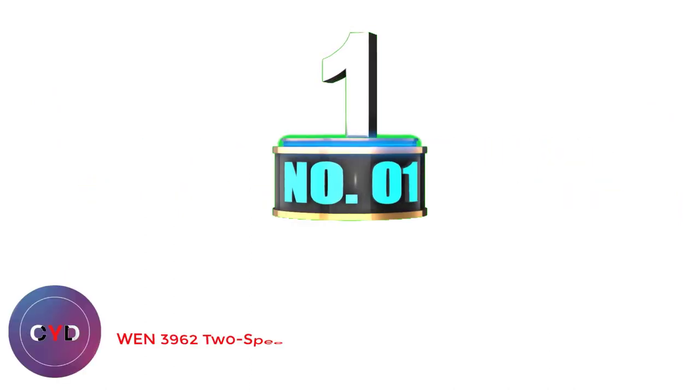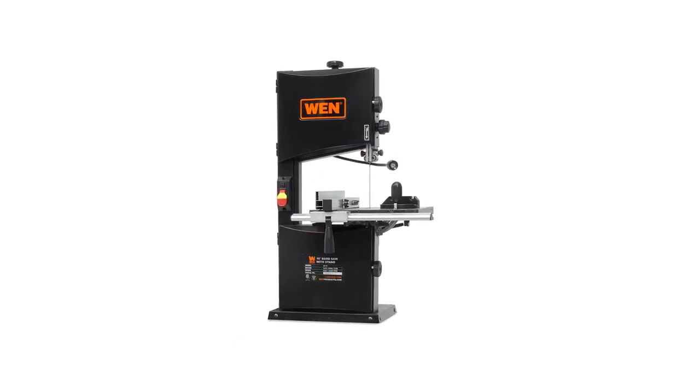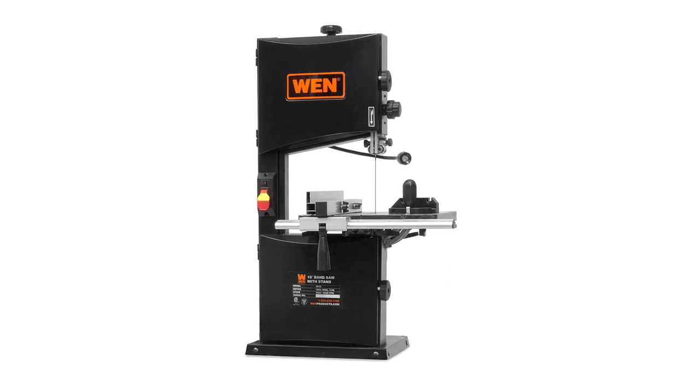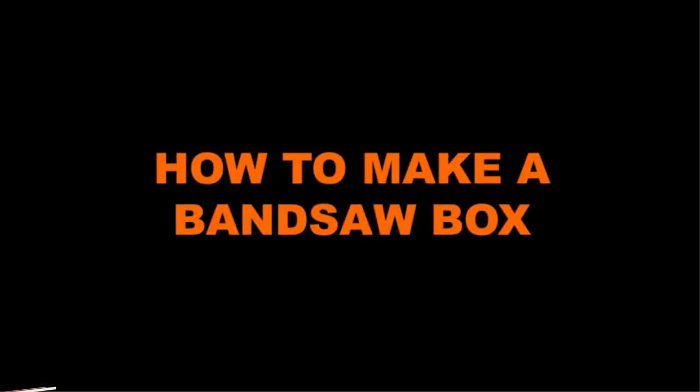Number 1: WEN 3962 2-Speed 10-inch Band Saw. If you're not sure what to cut, the WEN 3962 allows you to choose between 1520 and 2620 FPM, so you won't risk burning or ruining your material with the wrong speed.